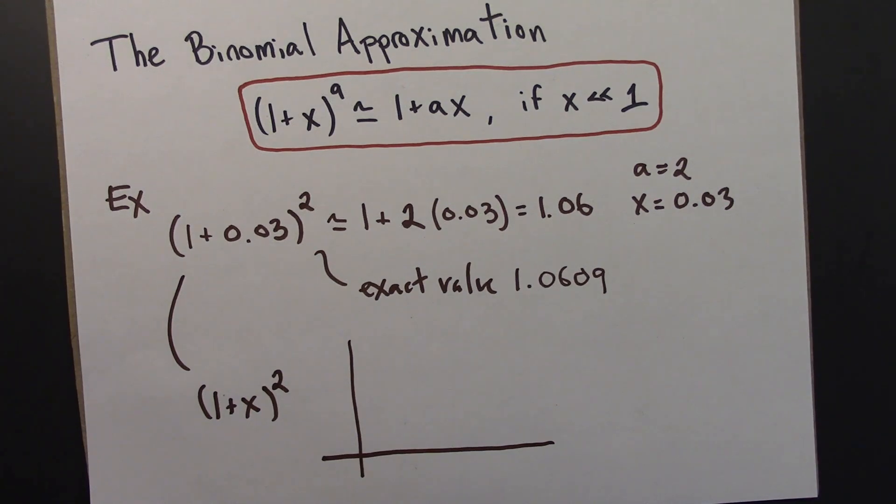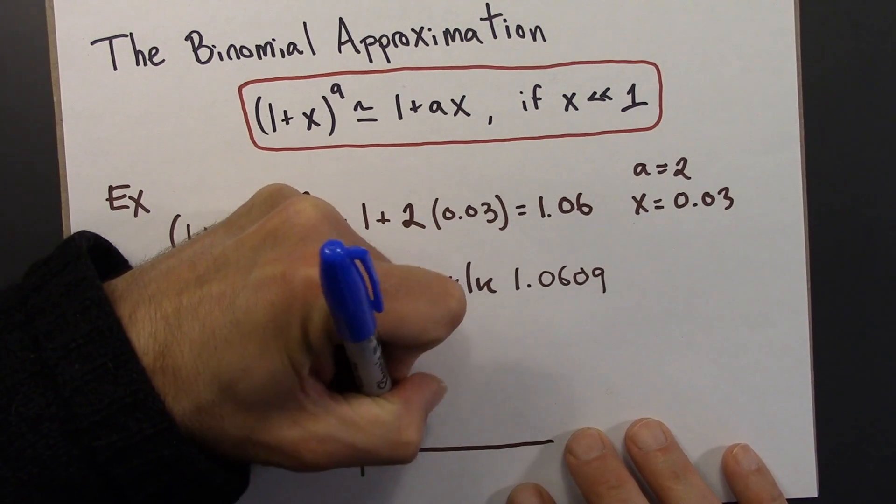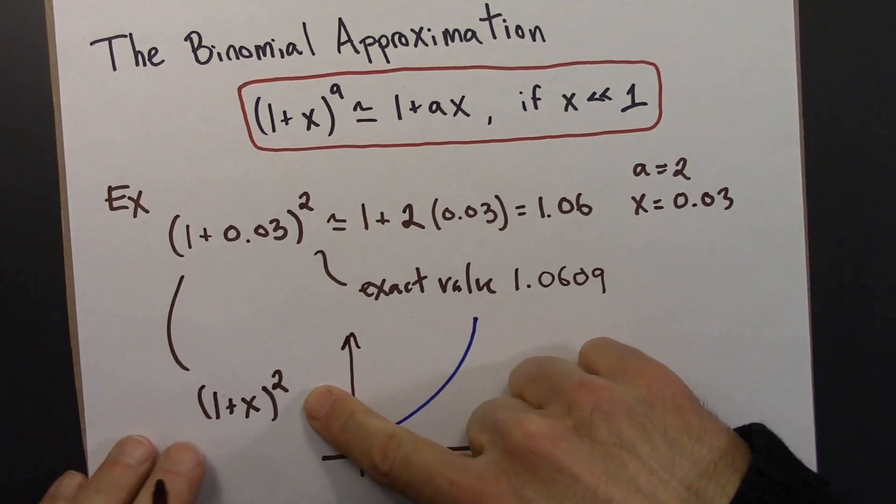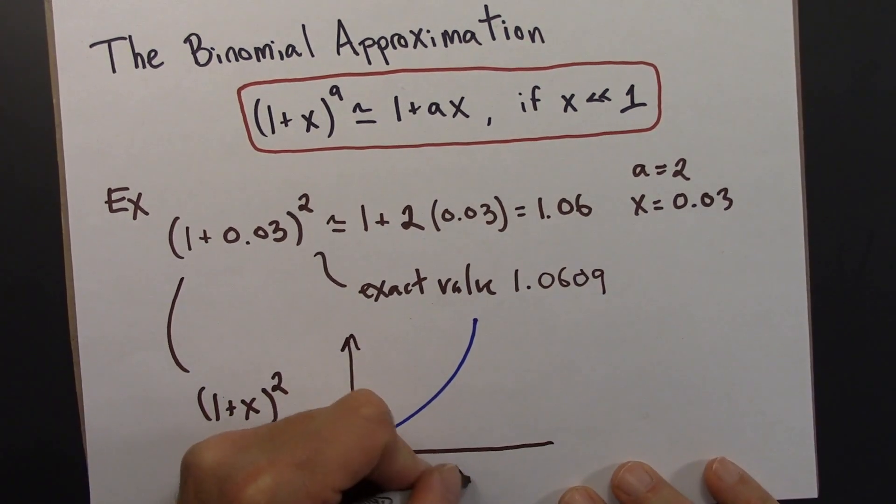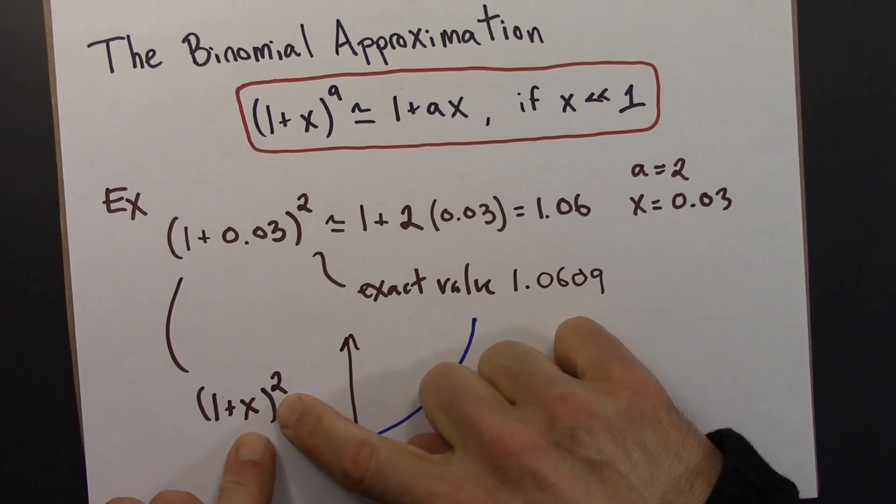But when x is 0, I still have 1. So this is going to look something like this. And let's label my axes. On this axis, it is (1 + x)². And this is x. So this is a parabola.